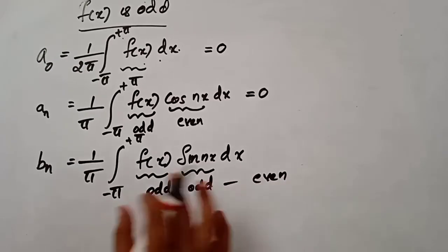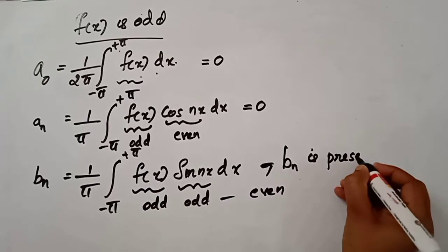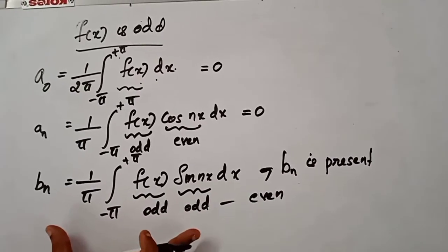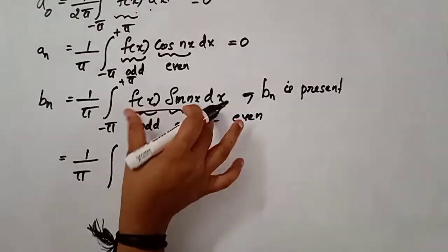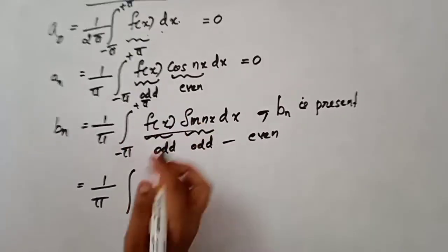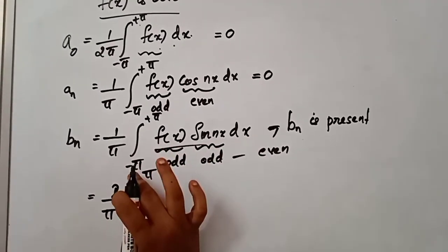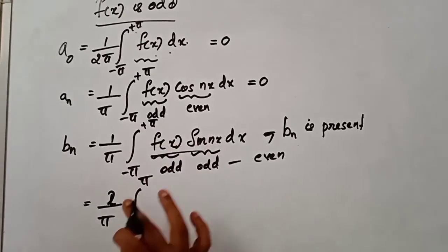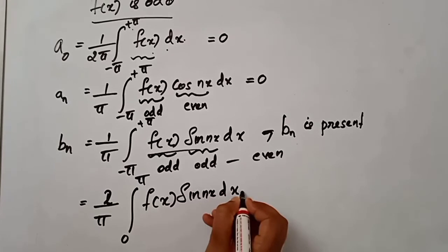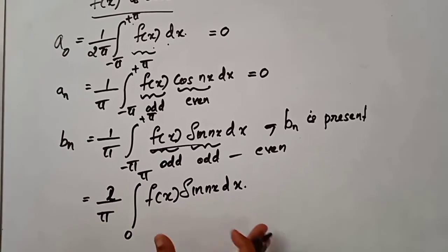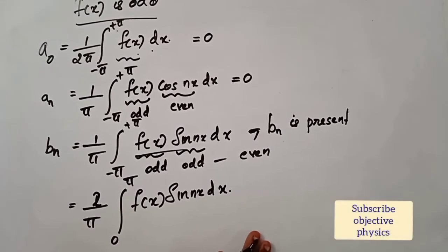The product of two odd functions is an even function, so bn is present. Therefore only the bn term is present if f(x) is odd. Since the integrand is an even function, the limit from minus pi to plus pi can be written as 2 times integral from 0 to pi of f(x) sin(nx) dx. Therefore only sin(nx) is present in this series when f(x) is an odd function.